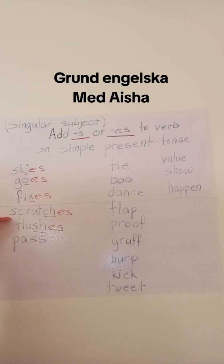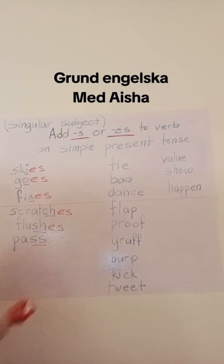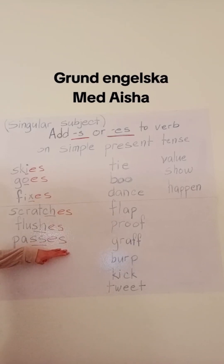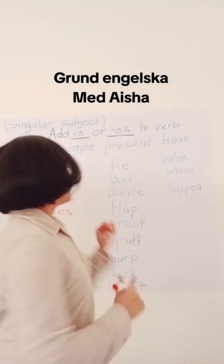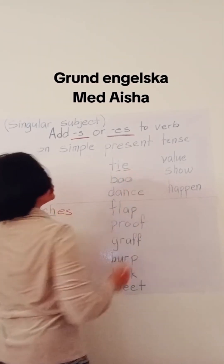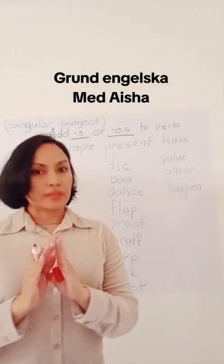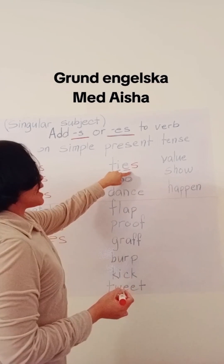We have here scratches, slushes. Now we have pass — double s. Since we have double s, we have to add es. So pass becomes passes. If our verb ends with two vowel letters like this — tie, i and e — we just need to add es. So tie becomes ties.